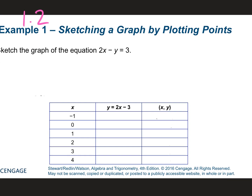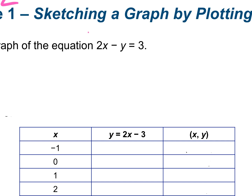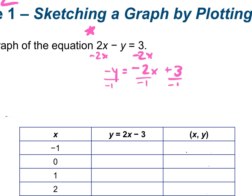We can sketch a graph by plotting points. If we're ever given an equation like this, it may be helpful to plug it into y equals first, or rearrange it to make it y equals. To make this equation y equals, we subtract the 2x and move it to the other side. So negative y equals negative 2x plus 3. Divide by negative 1, so y equals 2x minus 3, which they already did for us here.